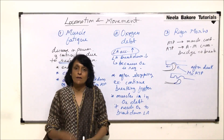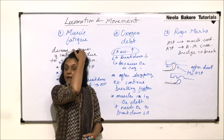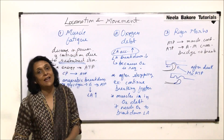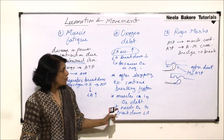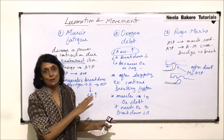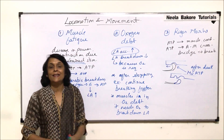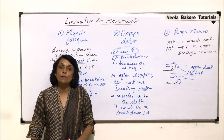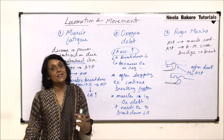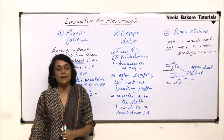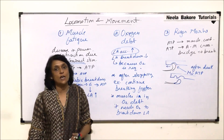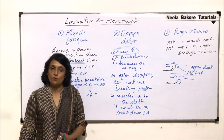So these are three important terms related to muscle and muscle contraction. With this we are done with the muscle part. In the next video we will take up the skeleton — that is, bone, cartilage, and various types of bones.